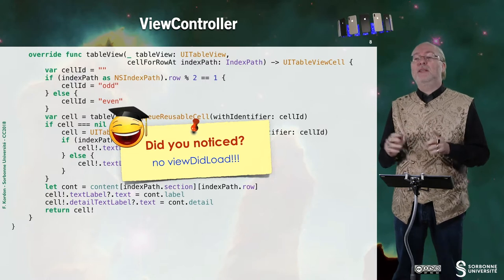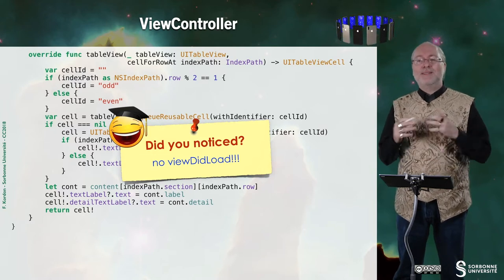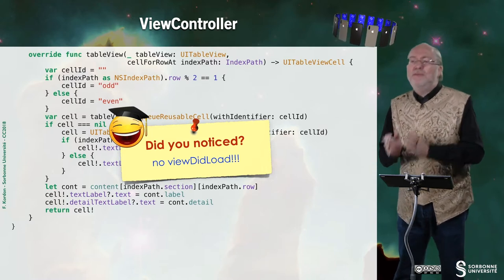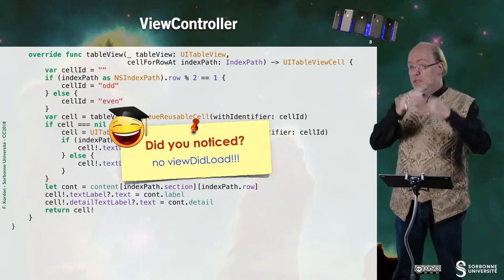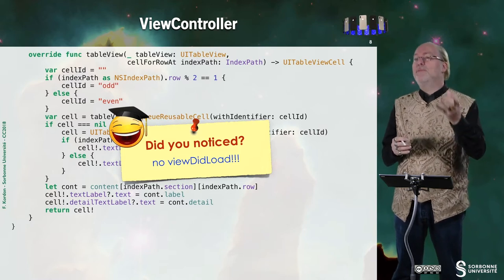You may have noticed there is no viewDidLoad in our implementation. It's not necessary here because everything that could be done in viewDidLoad was already done in the init. This doesn't mean you never have viewDidLoad when working with UITableViewController — it can be needed. The same applies to a regular ViewController: you can place logic at the init stage, at viewDidLoad, viewWillLoad, viewDidAppear, or viewWillAppear — there are several stages where you can add instructions.